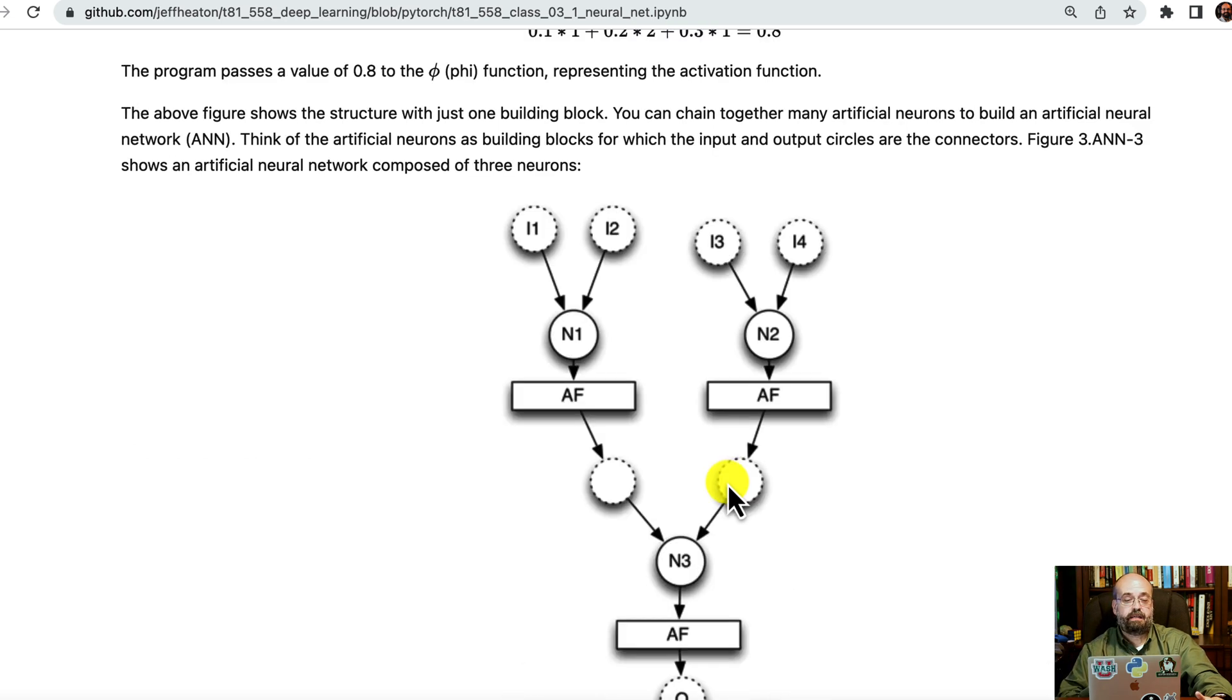Here we can create more complex structures. Most neural networks would not be structured this way, but you can certainly build them in PyTorch. So here we have the input one and the input two going into neuron one, input three and input four going into neuron two. Then neuron three takes these two and then puts it to the activation function. You have the output. I'm not showing the biases here just for simplicity.